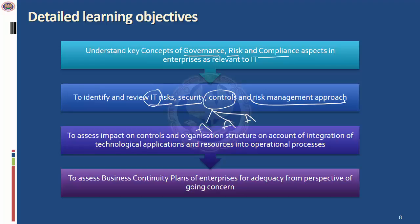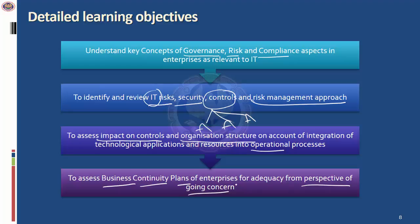As part of the learning objectives, you need to know the impact of information technology usage on controls, the organization structure of any enterprise, and how this is embedded in various technology applications. You also need to know how technology impacts various business and operational processes. When using IT, one of the biggest risks is that technology can fail, so you need the right business continuity plans to ensure business continues despite any disruption — that's where BCP comes in. From an accounting point of view, BCP is also understood from the perspective of going concern.